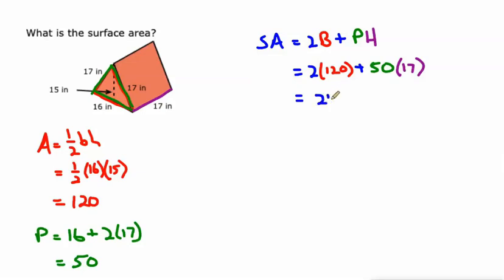Two times 120 is 240. 50 times 17 is 850.